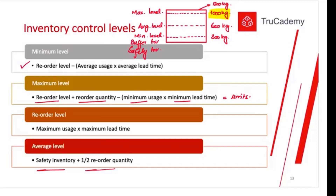A student asked: why is it half of reorder quantity? Half basically represents the average of reorder quantity — not the full amount. Since we are calculating an average level, we take safety inventory (the minimum) plus the average of reorder quantity. We don't always know how much we will reorder each time — sometimes orders are bigger, sometimes smaller — so using the full reorder quantity would give very different results each time.